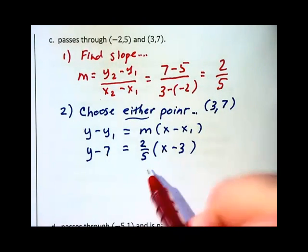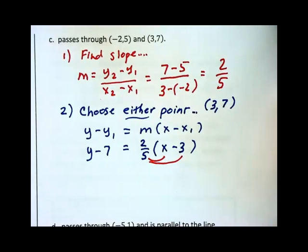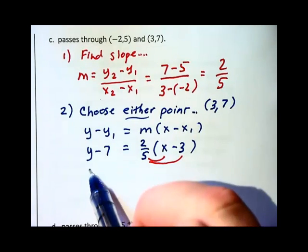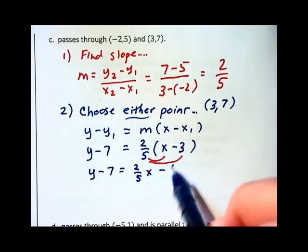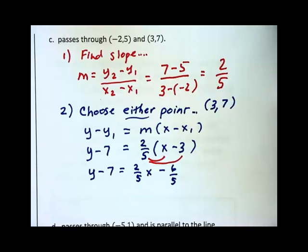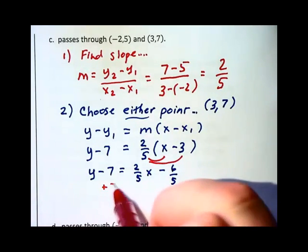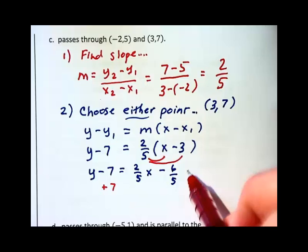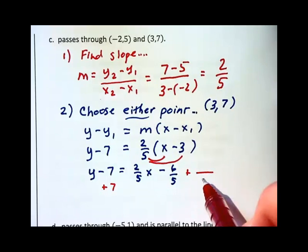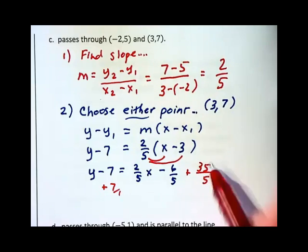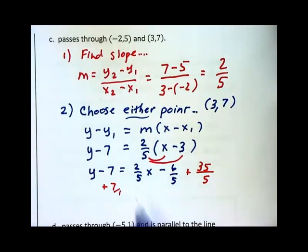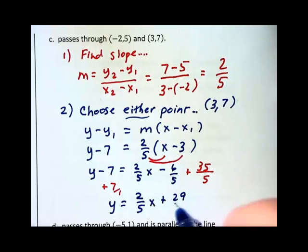All we need to do is convert it into the form we're interested in. Distributing gives us y minus 7 equals 2 fifths x minus 6 fifths. And then we need to add 7 to both sides. Technically on the right here I want to add something that's over 5. 7 over 1 is the same as 35 over 5. And we will then have y equals 2 fifths x plus 29 fifths.